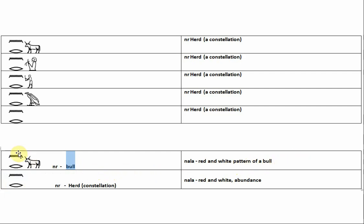It doesn't mean bull. It means red and white pattern of a bull. Okay? That's what N-R means. It's a color. Alright? And then of course N-R by itself, herd constellation is the color itself, red and white. Alright? But it also means abundance.